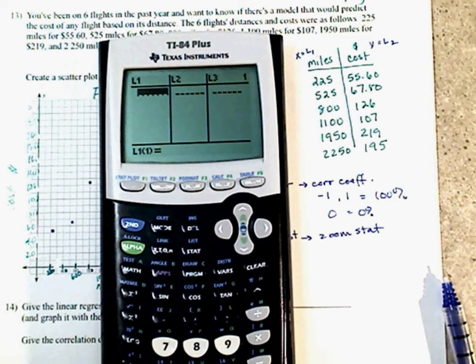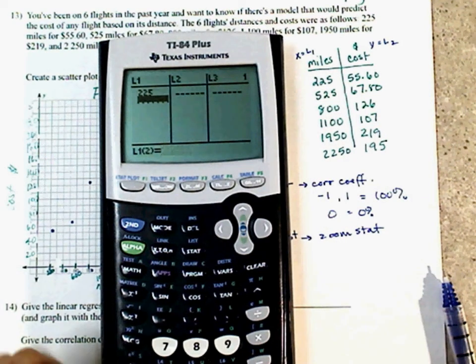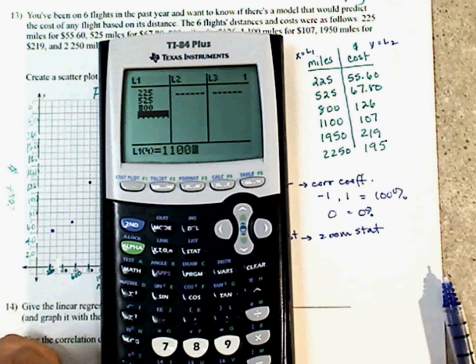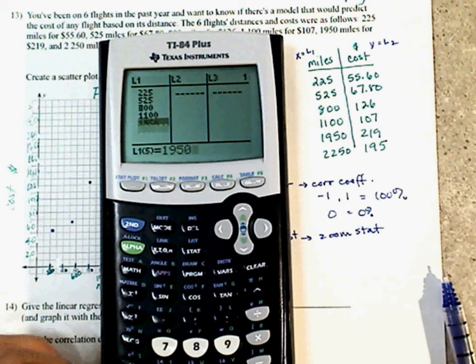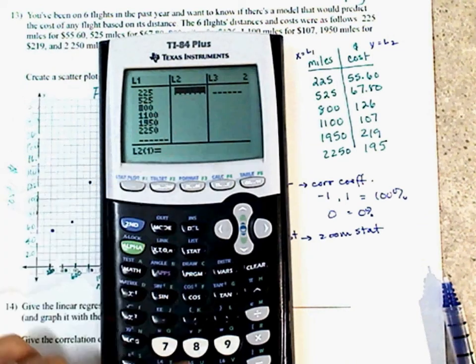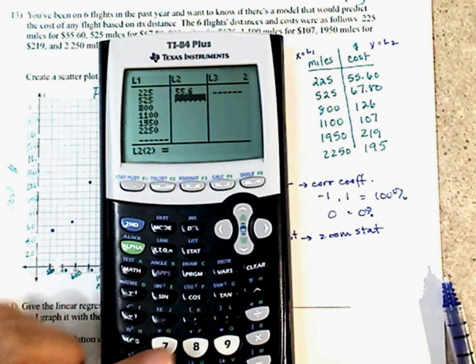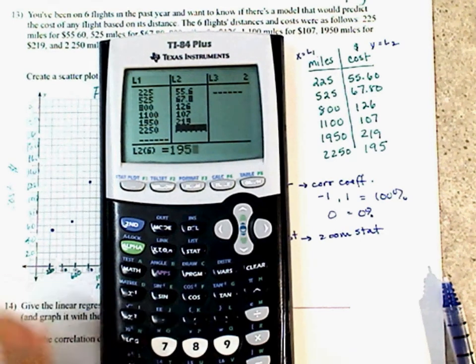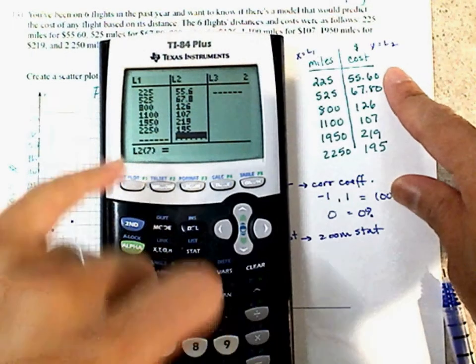L1: 225, 525, 800, 1100, 1950, 2250. For every X, you must have a Y. $55.60, 67.8, $126, $107, 219, 195. Check your numbers. For every X, you must have a Y.